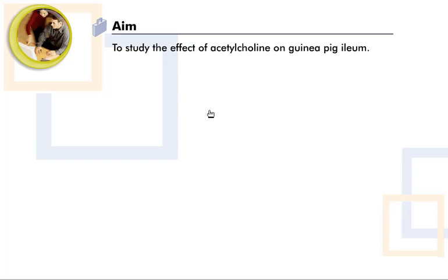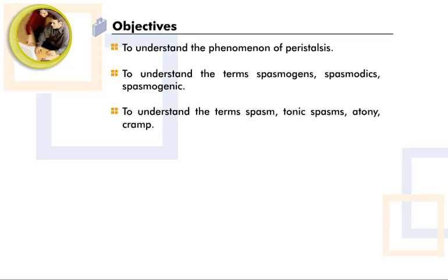The aim of this experiment is to study the effect of acetylcholine on guinea pig ileum. The objectives are to understand the phenomena of peristalsis, and to understand the terms spasmogen, spasmodics, and spasmogenic.